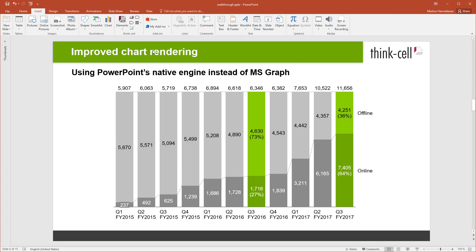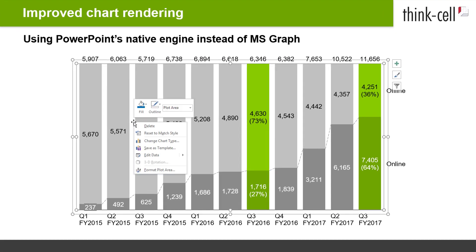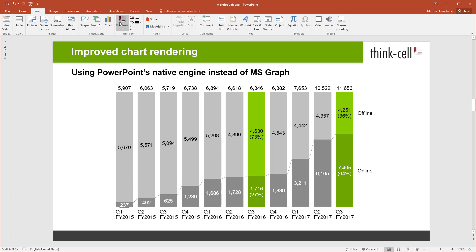In regards to visual quality and performance, ThinkCell 9 has taken a big step forward. All our users have transitioned away from Microsoft Office 2003, and we can now drop the support for Microsoft's legacy MS Graph charting engine. As you can see, when deactivating ThinkCell, all ThinkCell charts are now rendered using PowerPoint's native charting engine. And the best part is, since you are a ThinkCell user, you will not even notice that your charts now use the modern engine. ThinkCell's user interface is unchanged and makes the transition seamless.